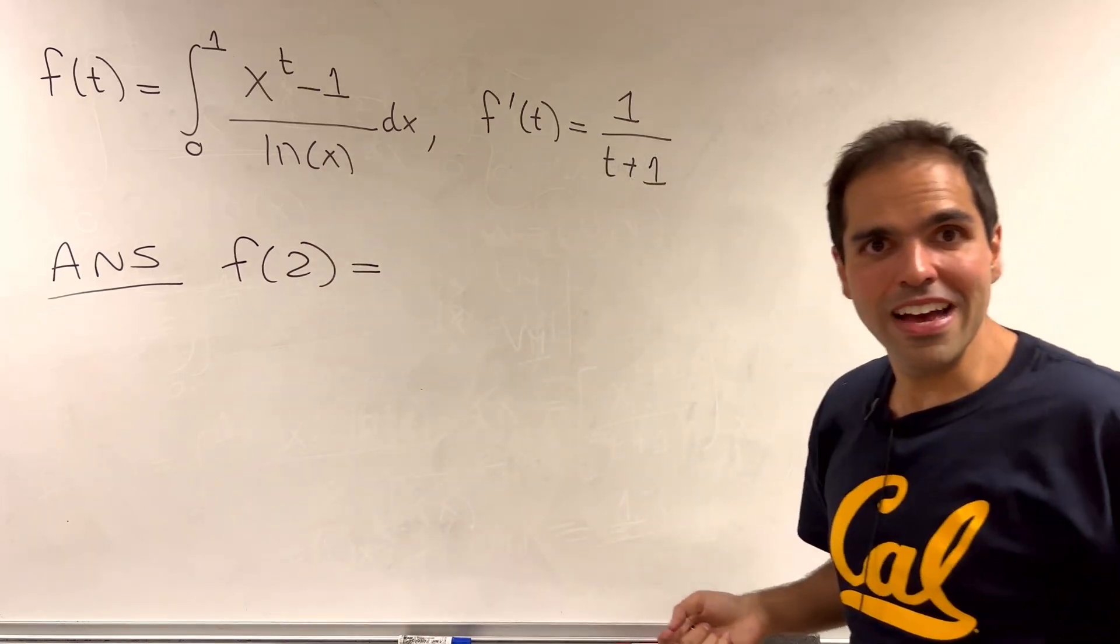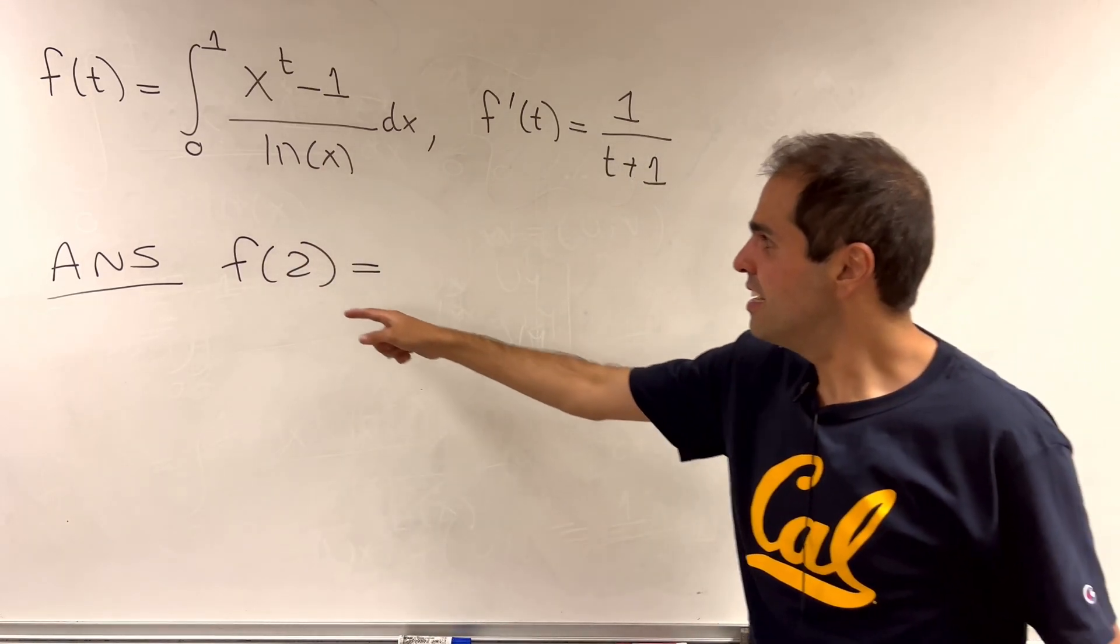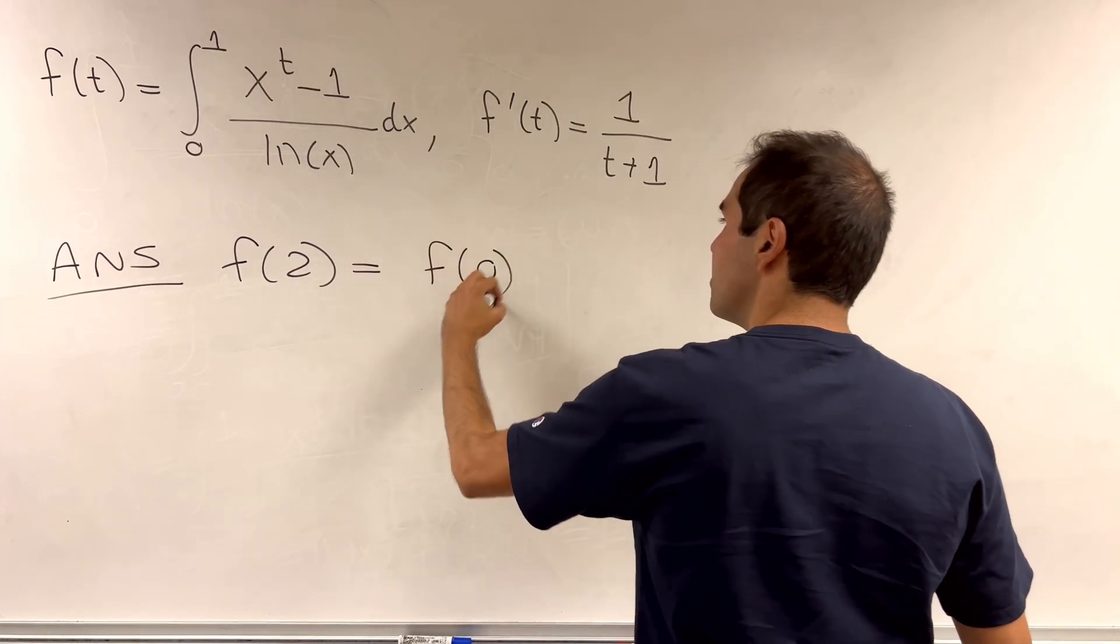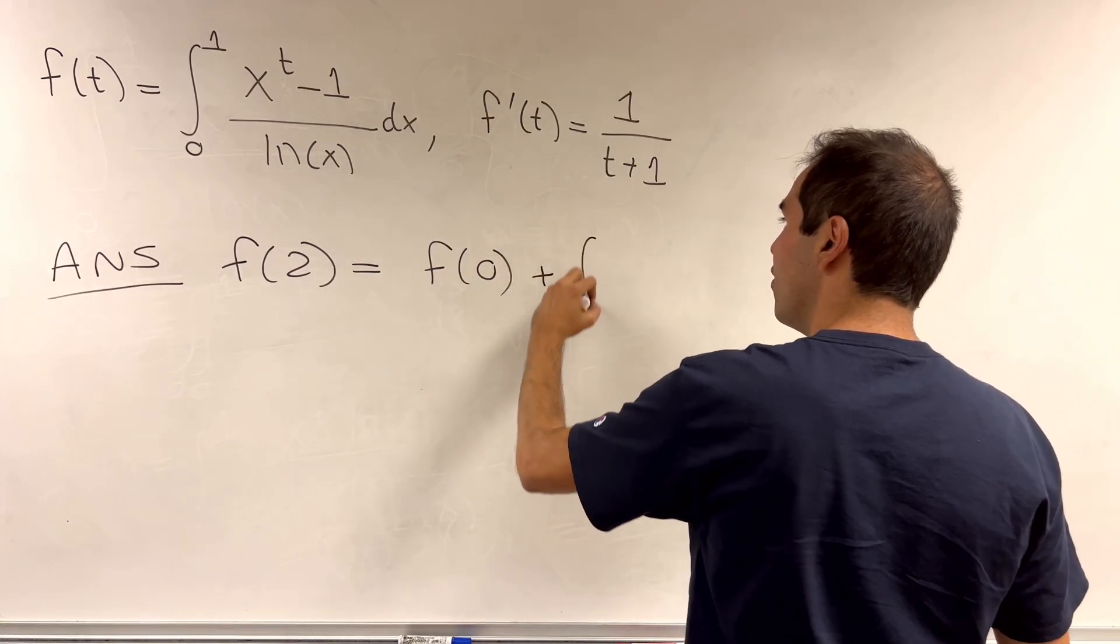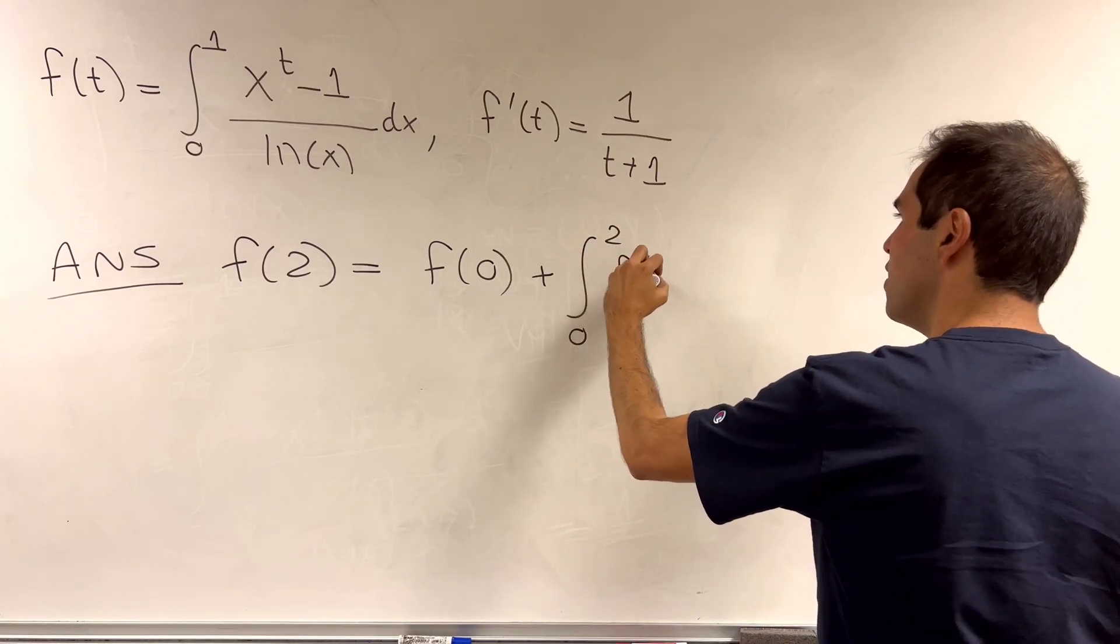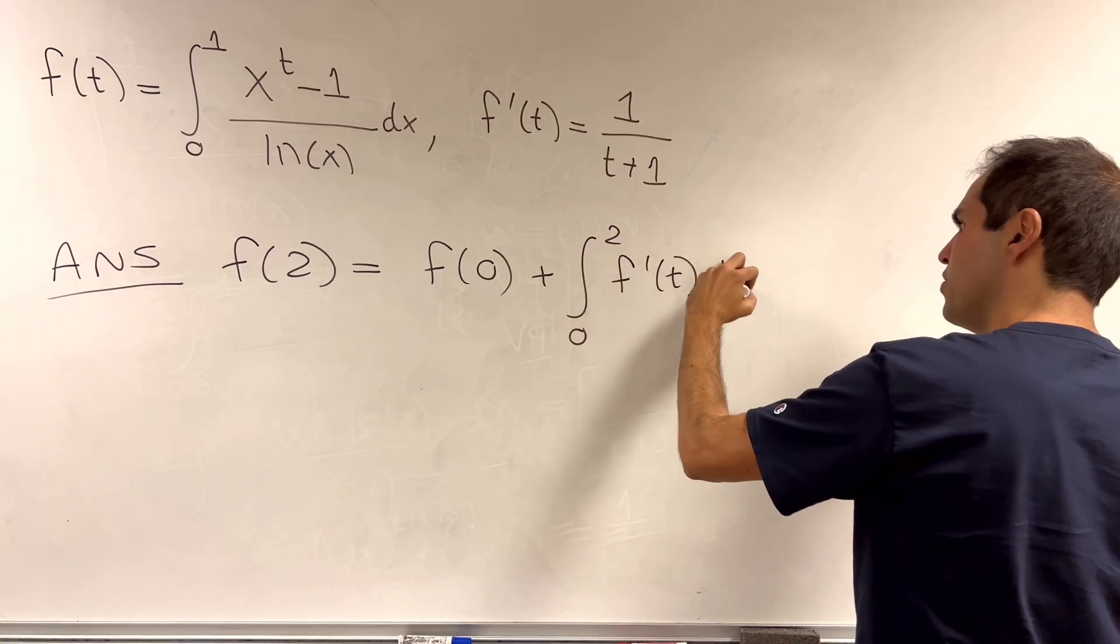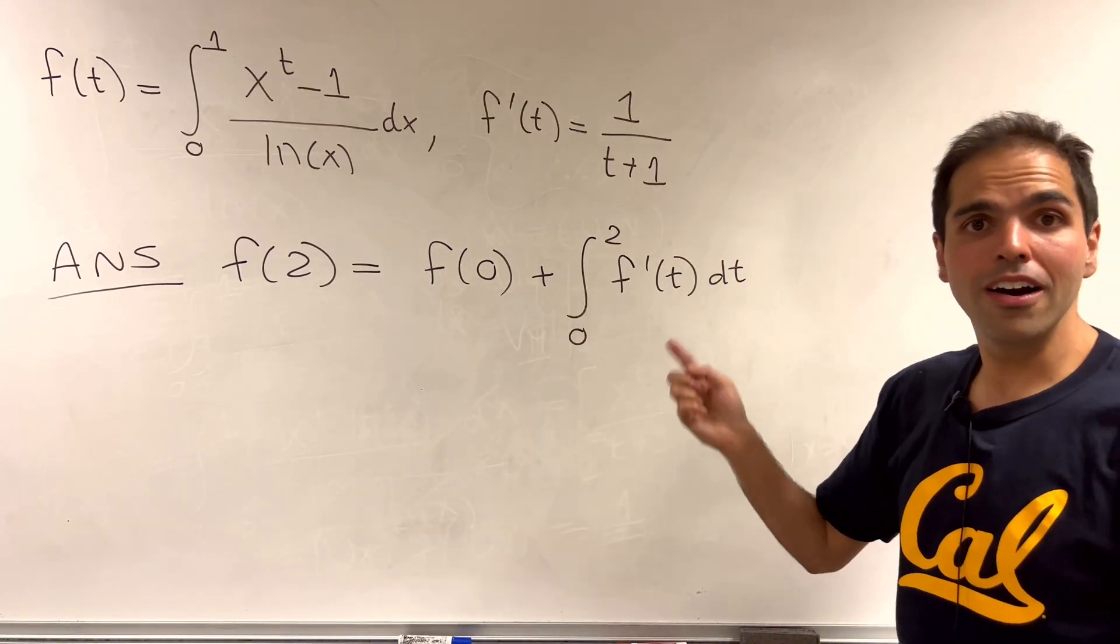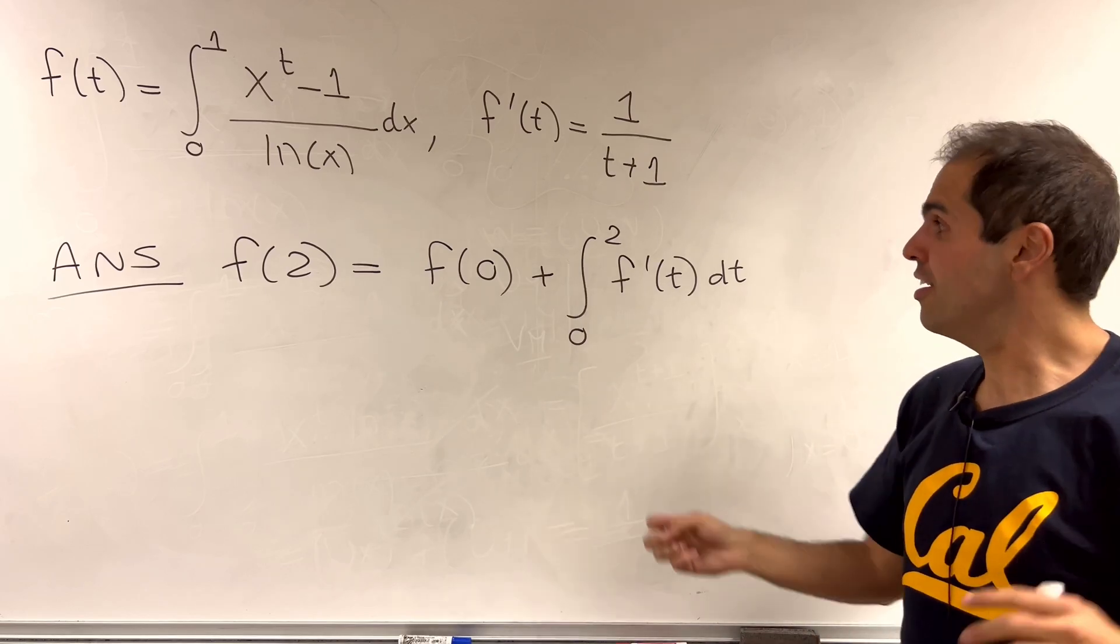But by the fundamental theorem of calculus, the value of f at 2 is the same thing as the value of f at 0 plus the integral from 0 to 2 of f prime of t dt. Kind of initial position plus change in velocity.